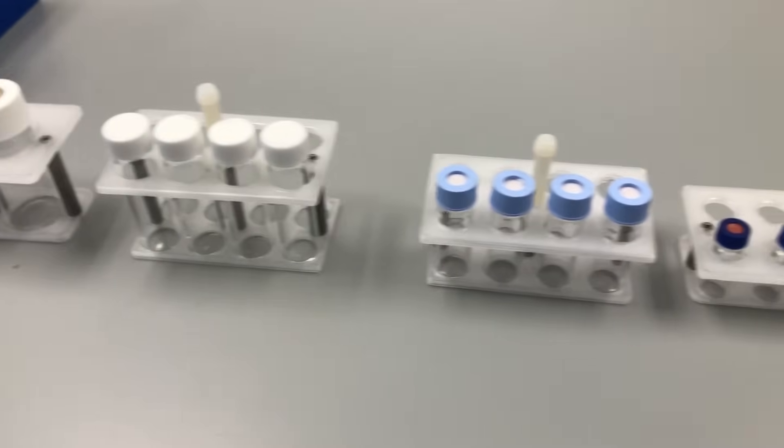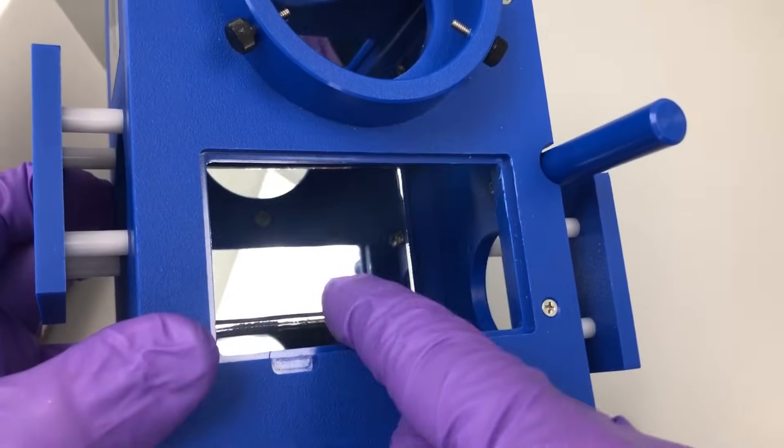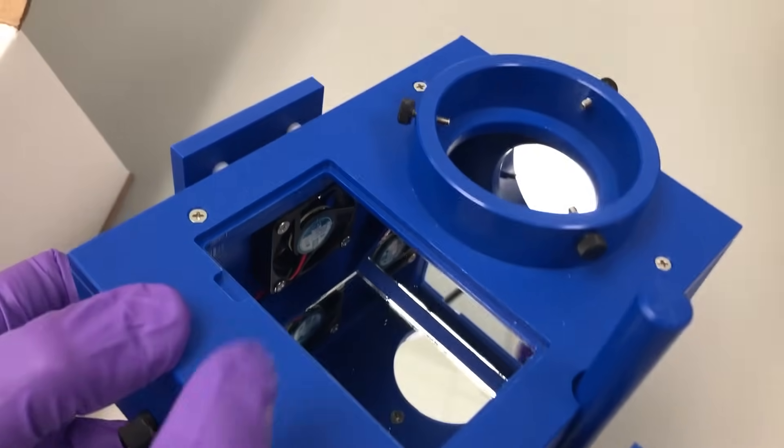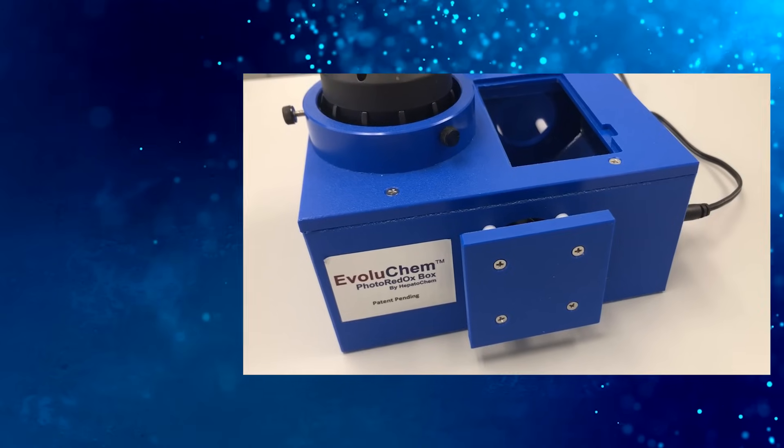Designed to accommodate a wide array of vial sizes and stirring plates, the photoredox box has an innovative and unique reaction chamber geometry for maximum light exposure and a built-in fan to keep reactions at room temperature.